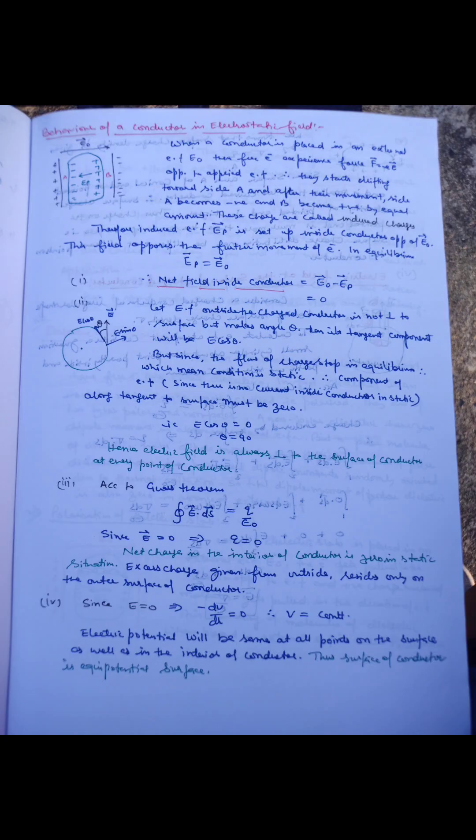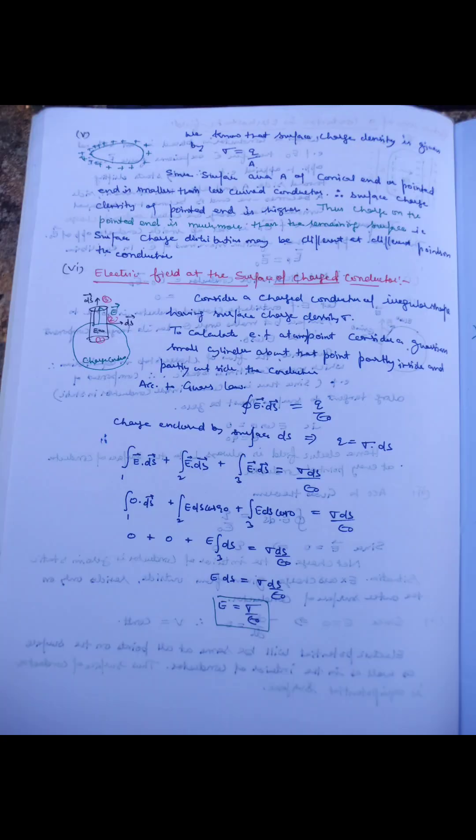When a conductor is placed in an external electric field, its free electrons experience a force and start drifting toward the opposite end, so an induced electric field is set up inside the conductor. This induced field opposes further movement of electrons, and at equilibrium the two fields are equal, so no net electric field exists inside the conductor. The electric field at the surface of a charged conductor is equal to σ/ε₀, where σ is the surface charge density.